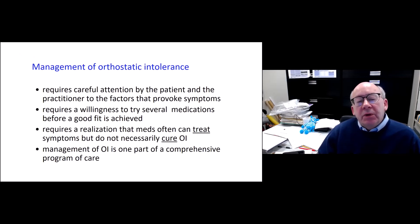So managing orthostatic intolerance requires a lot of attention by the patient and the practitioner. So this is teamwork to identify the factors that provoke their symptoms. And it is rare that the first medication we try is going to be the most effective. You've got to be willing to try several medications before you find a good fit. And it involves making sure you're still looking for the other comorbid conditions if none of the usual medications are working, because there's usually some other reason why people are continuing to have problems. It requires a realization, much like we have in patients with asthma, that the medications can treat symptoms but don't necessarily cure the underlying problem. We're just trying to get people very functional. Management of the orthostatic intolerance is one part of a comprehensive program of care. So you've got to have people looking at all of these other problems that can influence orthostatic intolerance.